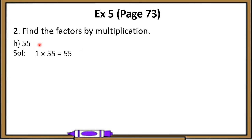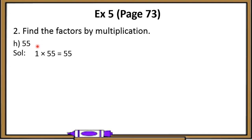So 2 is not a factor of 55. Let's try 3. On division of 55 by 3, again we are left with some remainder, so 3 is also not a factor. Now let's try 4. Division by 4 will also leave a remainder, so 4 is not a factor either. Now let's try 5. On division by 5, we are left with remainder 0, which means 55 is completely divided by 5 and the quotient is 11.